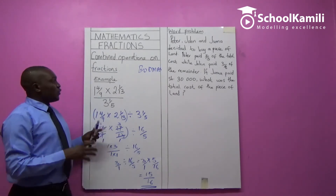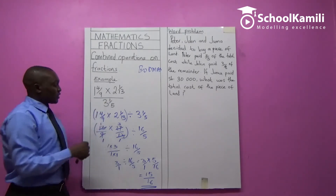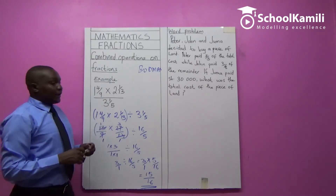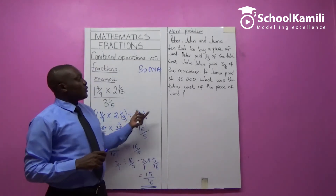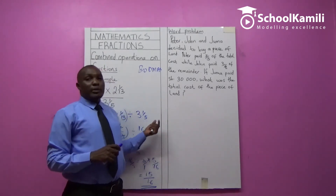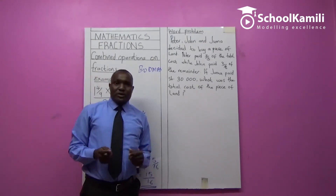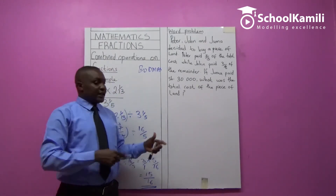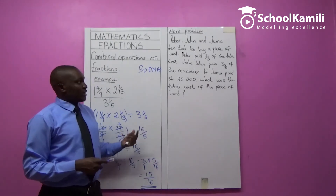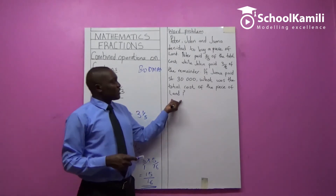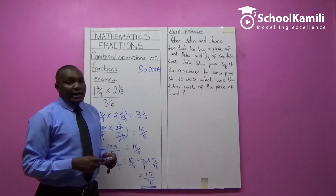That's how you work out problems involving combined operations when you have two or more signs in one problem. Now I want to take you through one more problem, and this is where most pupils normally go wrong. The reason is most pupils don't read questions carefully — they just start working out without even going through the question.